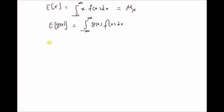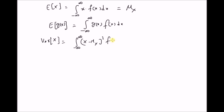From this definition, we can find the variance of the random variable X as the integral from minus infinity to plus infinity of (x minus μx) squared times f(x) dx. Based on these definitions, we want to prove the following properties.